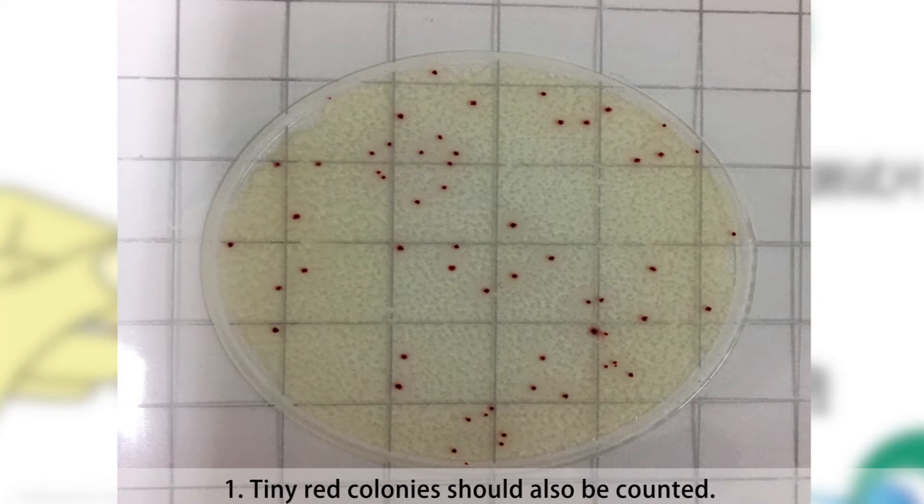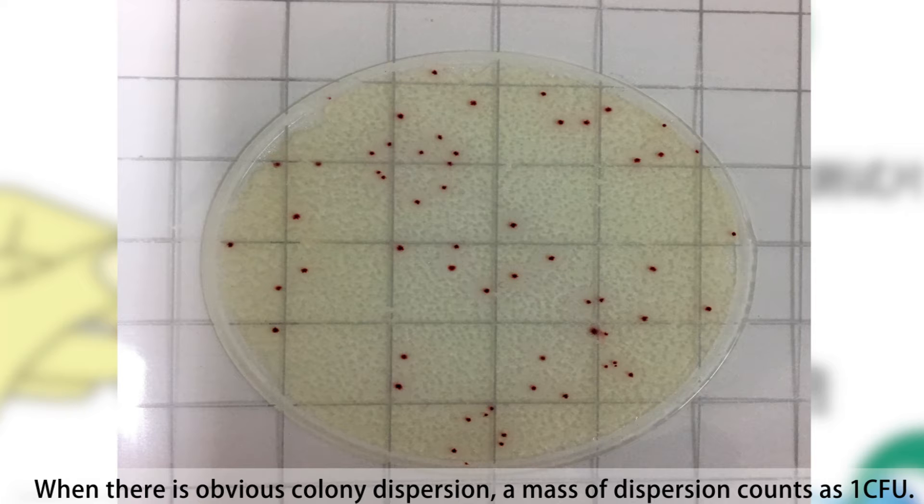Notice: First, tiny red colonies should also be counted. When there is obvious colony dispersion, a mass of dispersion counts as 1 CFU.